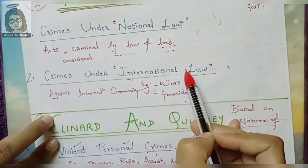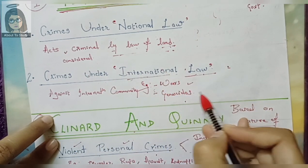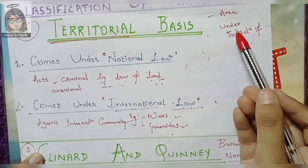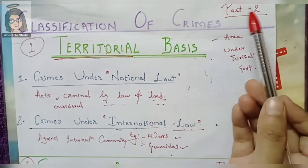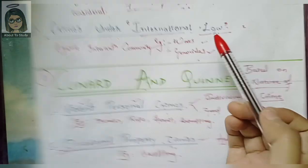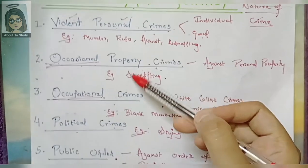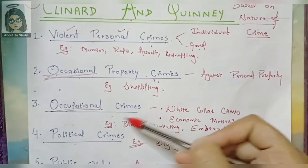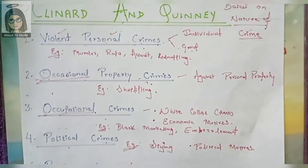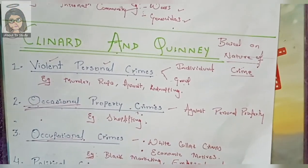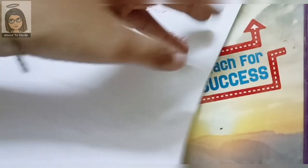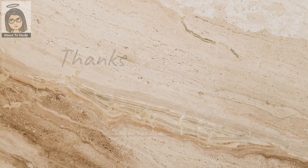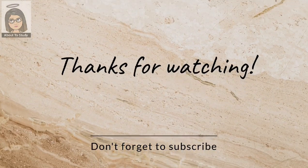Wars, genocides, mass killing, and mass murder — these are all crimes. If we go to international territory, we discussed the classification of Clineard and Quinney. This was the end of our classification of crimes. We will discuss the classification of criminals next, which will also be divided into certain parts. Please show some positive response on this video lecture. I hope you liked it. Thank you.